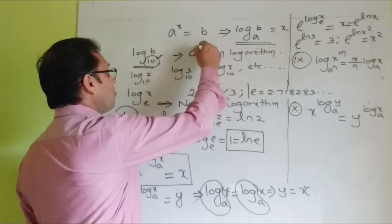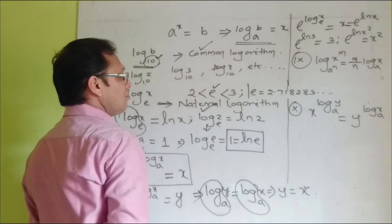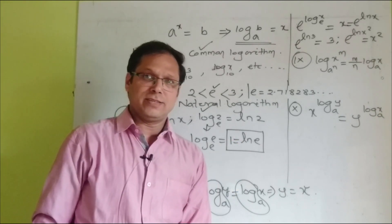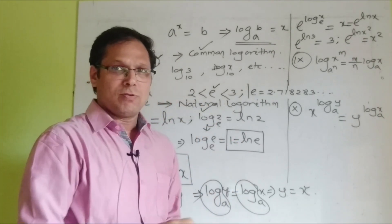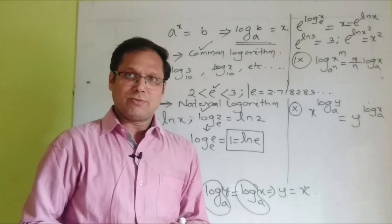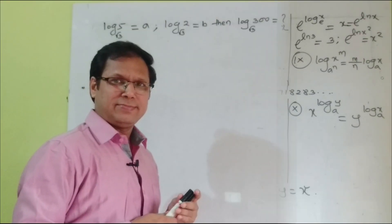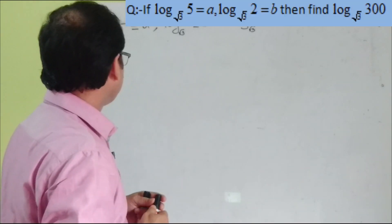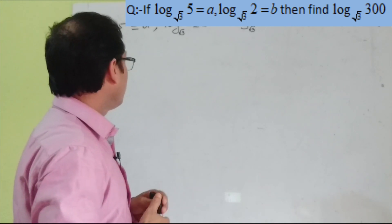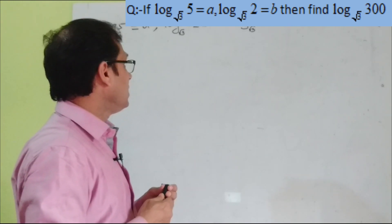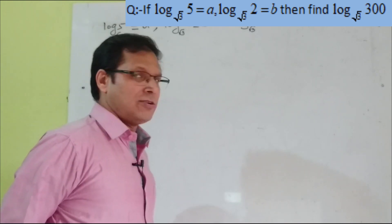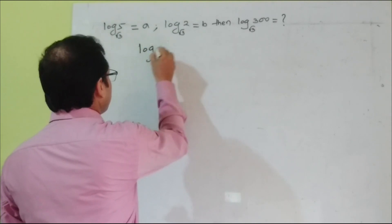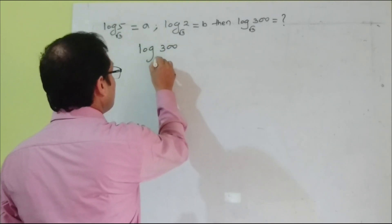So all ten rules, common logarithm, and natural logarithm have been covered. Now we will do some entrance-oriented problems using all these fundamental rules. The first question: given log 5 to the base √3 equals a and log 2 to the base √3 equals b, find the value of log 300 to the base √3.